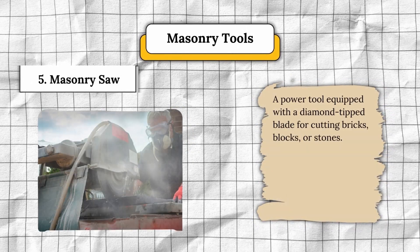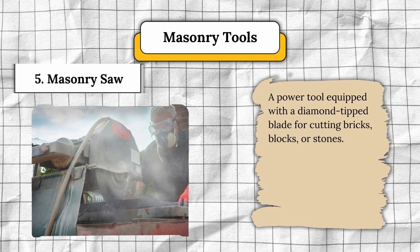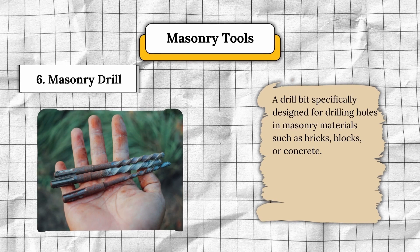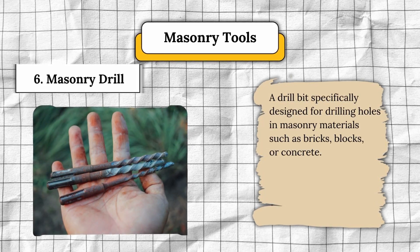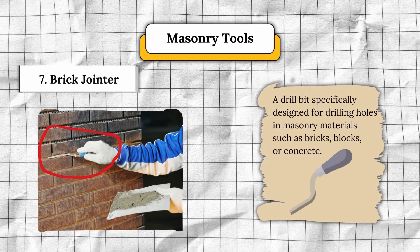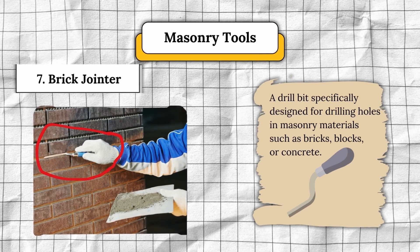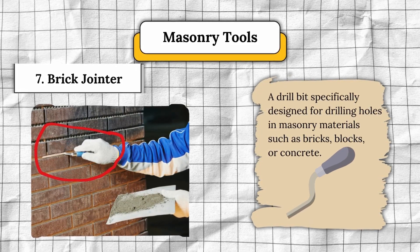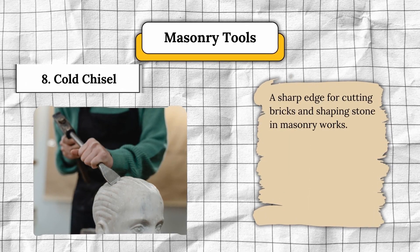Number five, masonry saw — a power tool equipped with a diamond-tipped blade for cutting bricks, blocks, or stones. Number six, masonry drill — a drill bit specifically designed for drilling holes in masonry materials such as bricks, blocks, or concrete. Number seven, brick joiner — a handheld tool with a pointed or rounded edge for shaping and smoothing mortar joints between bricks or blocks. Number eight, cold chisel — a sharp edge for cutting bricks and shaping stone and masonry works.